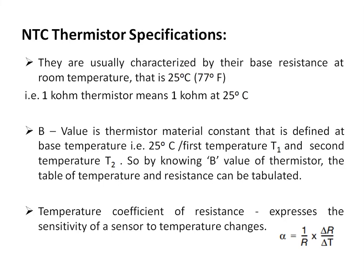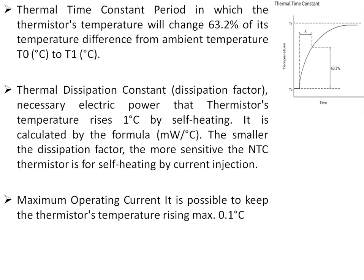Typical NTC thermistor specifications include: base resistance (the resistance at 25°C), the B value (the material constant defined between two temperatures, typically 25°C and another temperature), and temperature coefficient of resistance (alpha = ΔR/R divided by ΔT), which expresses the sensitivity of the sensor to temperature changes. The thermal time constant is the time taken for the thermistor to reach 63.2% of the final temperature change from ambient.